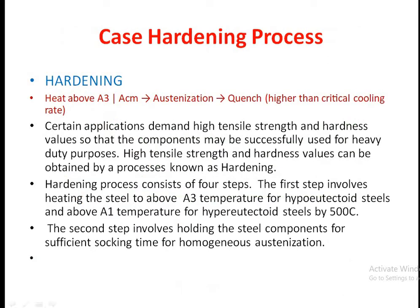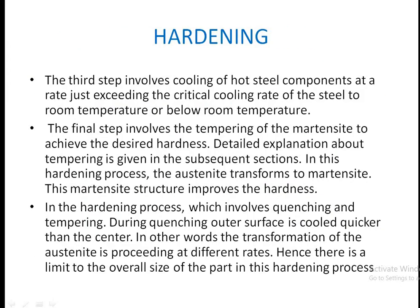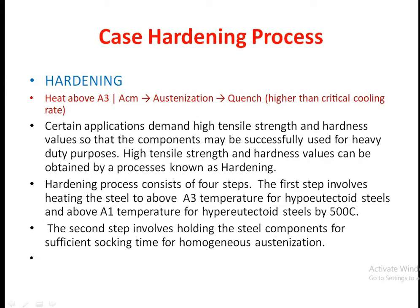For studying the hardening process: you heat above the A3 line (or Acm line), perform austenization, and then quench at higher than the critical cooling rate. Certain applications demand high tensile strength and hardness values so that components may be used for heavy-duty purposes, and high values can be obtained by the process known as hardening.